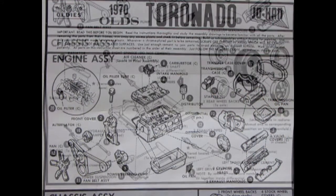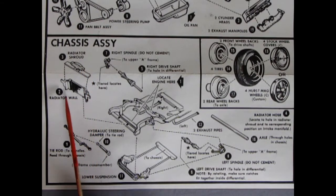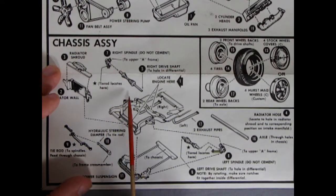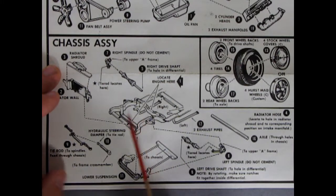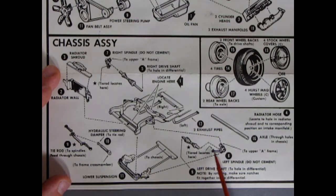Our next panel here shows our chassis assembly. We have our radiator shroud gluing onto the radiator wall. The tie rod locates in here on your right spindle and then the engine locates in this area here on your frame. There's our lower suspension with the torsion bars, and then we've got a hydraulic steering dampener which glues to the tie rod here and it says feed through the chassis to the spindles, and that would be on these little points here. And then we have an axle which goes through the holes in the chassis.